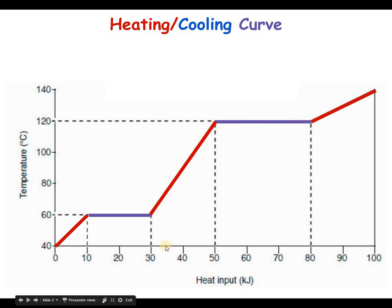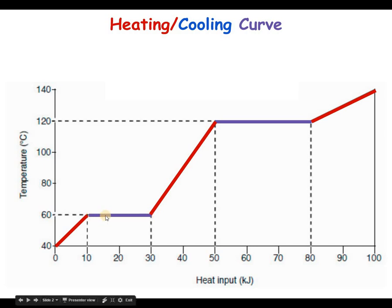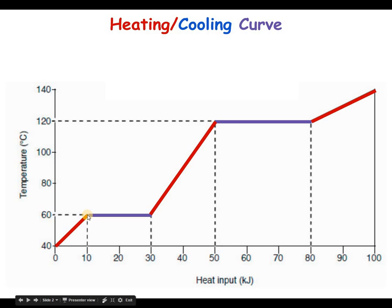The energy cannot be created or destroyed, so the heat absorbed during these plateau periods is not disappearing — it's just converted into something that cannot be measured by temperature. Temperature only measures the amount of kinetic energy in the substance. During this first plateau, our substance is melting, and the temperature at which it turns from solid to liquid is called the melting point.